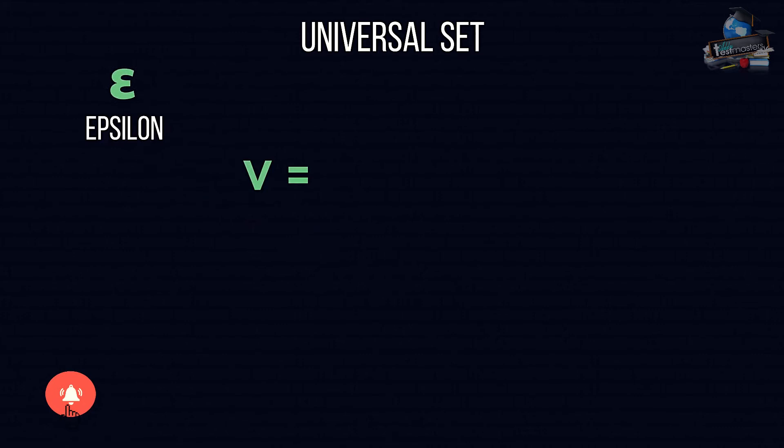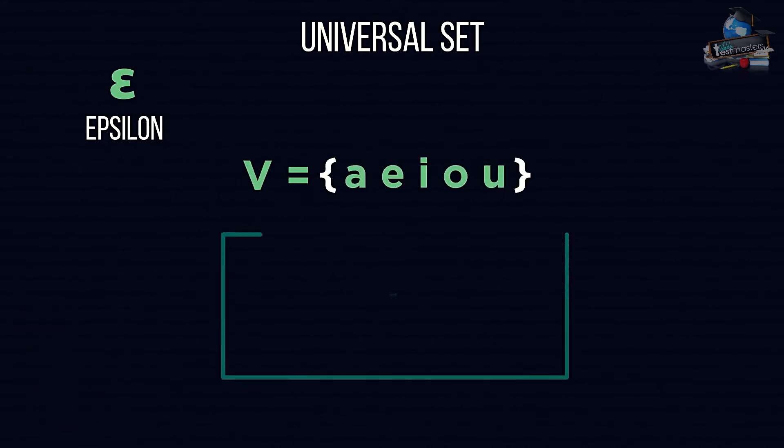We also have something called the universal set. This includes everything we are looking for, and usually has the symbol epsilon. For example, with the letters of the English alphabet, V is the set for vowels, but included in the universal set are all letters.